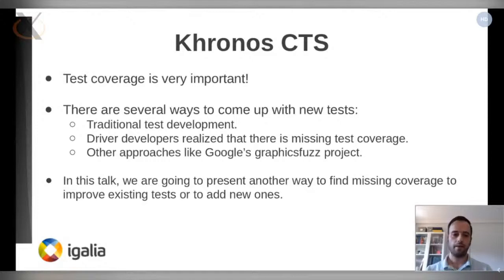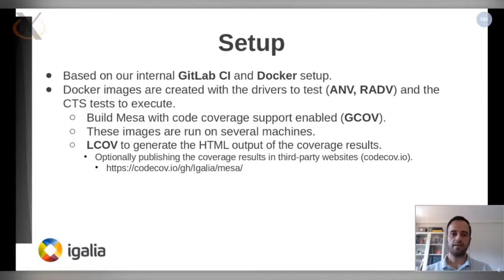In this talk, I'm going to talk about another way to find new missing coverage for CTS. It is based on analyzing the MESA code coverage after running the whole CTS suite on different drivers. Let's start first with the setup. For doing the MESA code coverage, we use our own existing internal GitLab CI, which uses Docker internally.